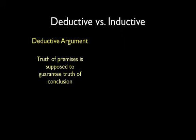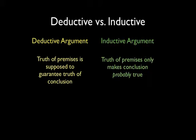Arguments are traditionally divided into two kinds, depending on the level of support the premises yield to the conclusion. If the truth of the premises is supposed to guarantee the truth of the conclusion, we say the argument is deductive. If the truth of the premises only makes the conclusion probably true, we say the argument is inductive or non-deductive. Let's focus on deductive arguments.